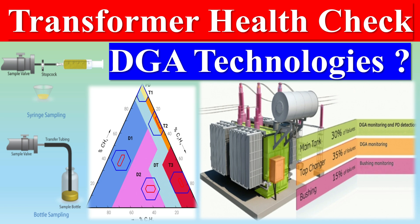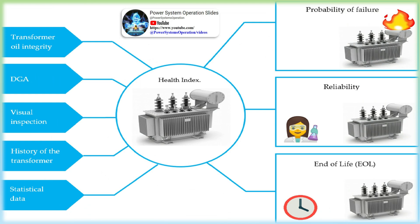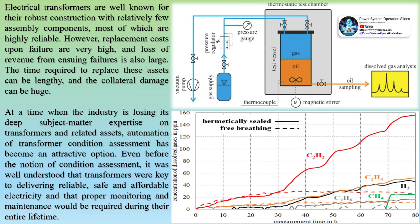Electrical transformers are well known for their robust construction with relatively few assembly components, most of which are highly reliable. However, replacement costs upon failure are very high, and loss of revenue from ensuing failures is also large. The time required to replace these assets can be lengthy, and the collateral damage can be huge. At a time when the industry is losing its deep subject matter expertise on transformers and related assets, automation of transformer condition assessment has become an attractive option.